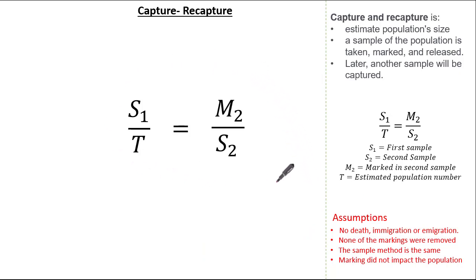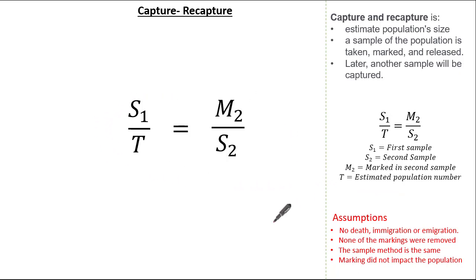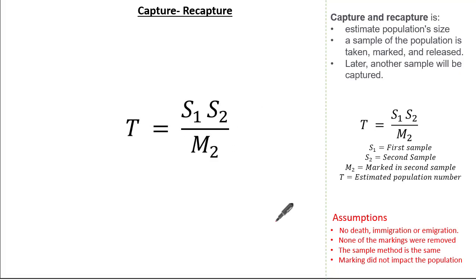You may have seen this formula written in a different way, but it's still the same. S1 identifies the number in the first sample, S2 the number in the second sample, M2 the number marked in the second sample, and T is the estimated population number. I find it easier to rearrange to make T the subject by cross multiplying, giving us T equals S1 multiplied by S2, divided by M2.